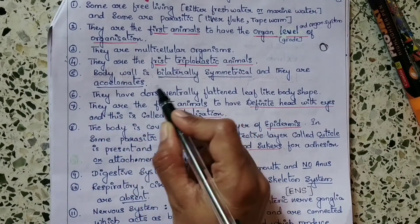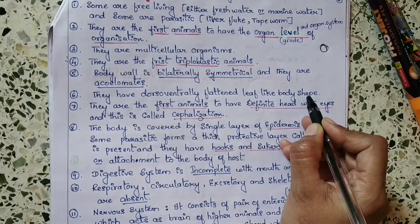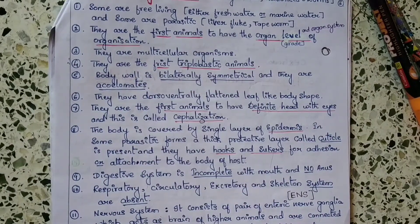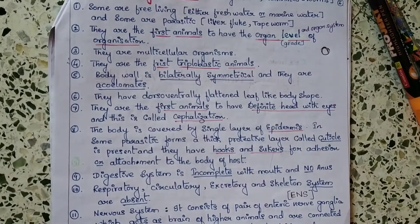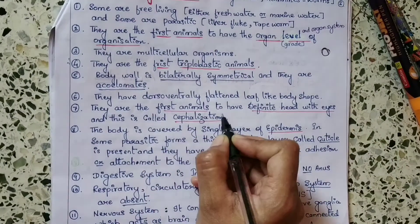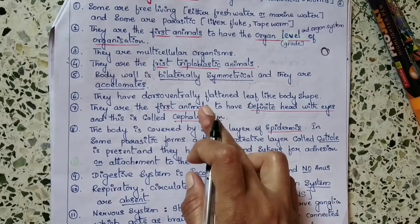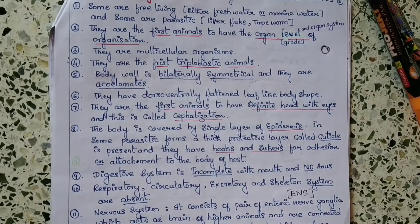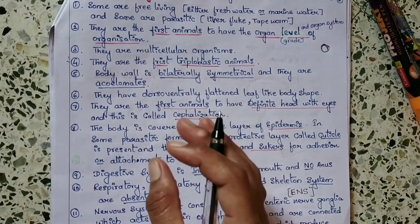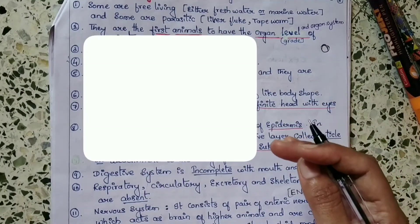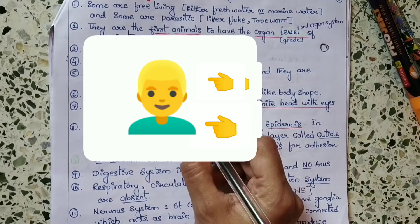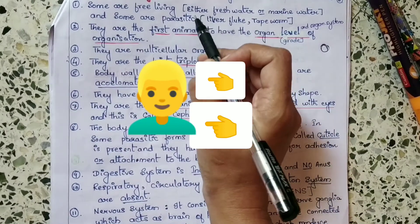They have a dorso-ventrally flat, leaf-like body shape. As the name Platyhelminthes itself indicates, they are dorso-ventrally flat. And they are the first animals to have a definite head with eyes — this is called cephalization. Cephalization is the process of separation of the head from other body parts, and this feature is shown by Platyhelminthes.